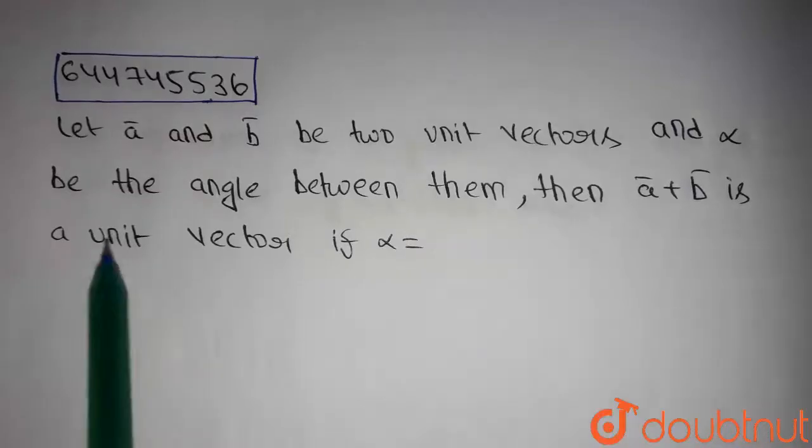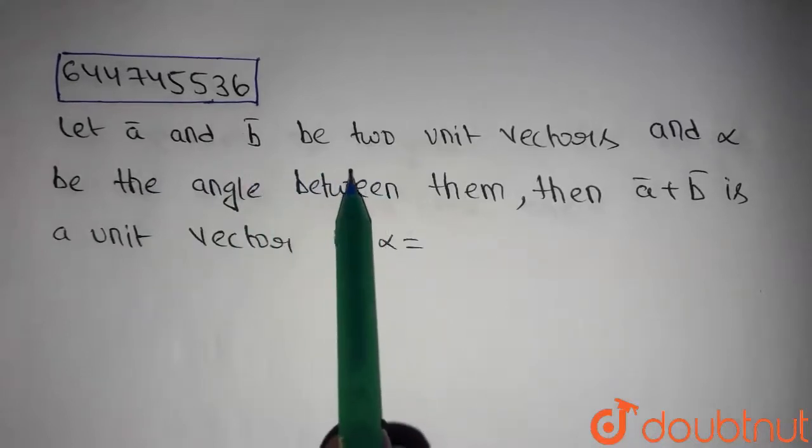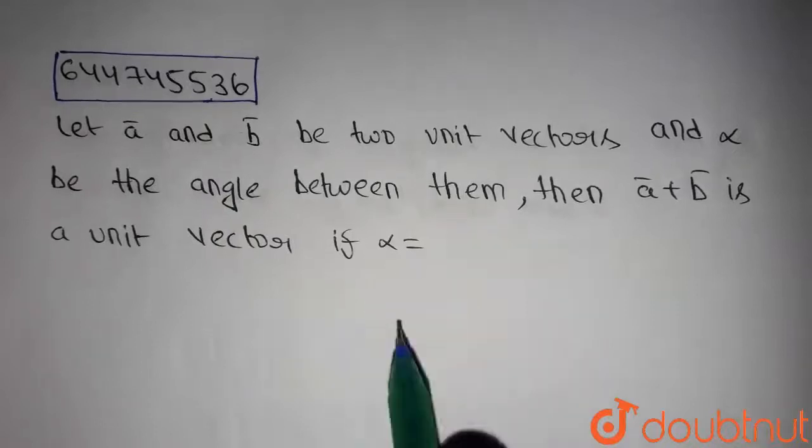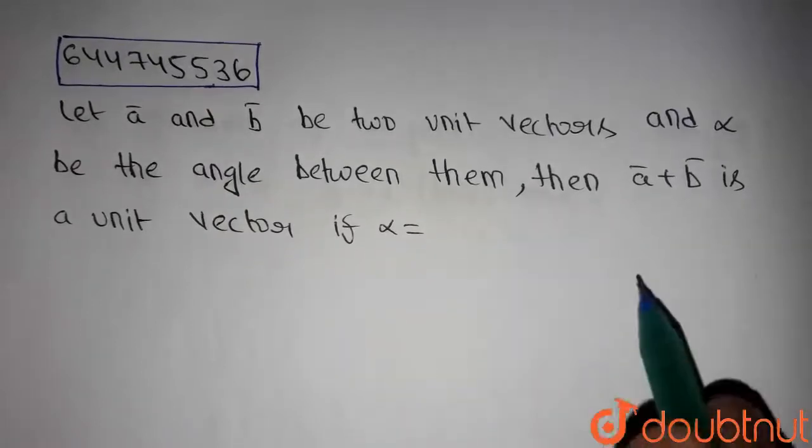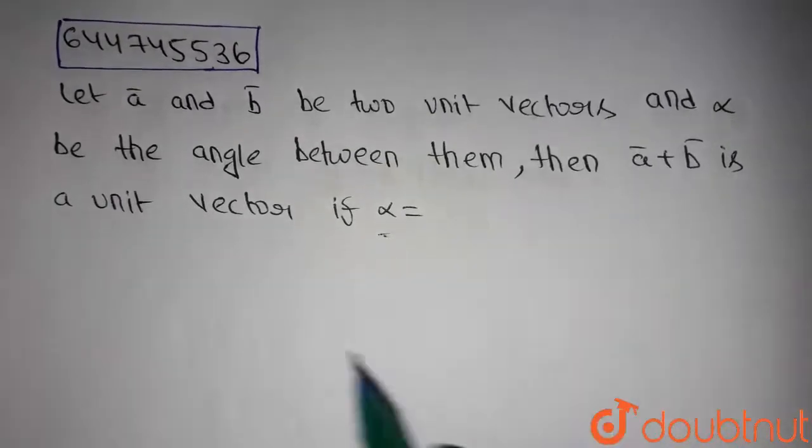Guys, this is today's question. We have two vectors a and b, and magnitude of a is equals to one and magnitude of b is equals to one, and alpha is the angle between a and b. If a plus b is a unit vector, then we have to find the value of alpha.